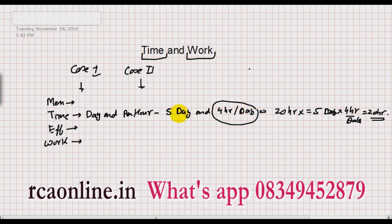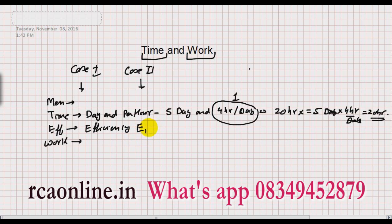Many times in a question, this part will be given: that someone did the work and they did it in 5 days. So we will take that as 1. That is the important part. Third is efficiency — efficiency means how you are working. Someone works quickly, someone works slowly. If efficiency is not mentioned in the question, we will take efficiency as 1.